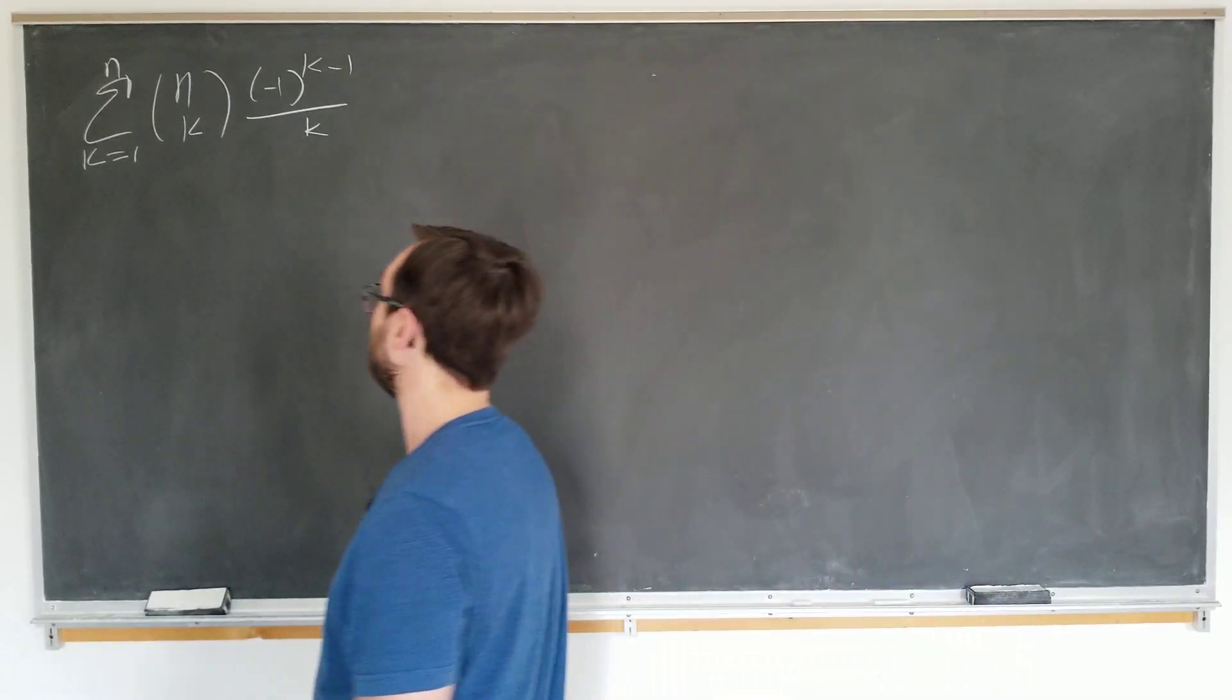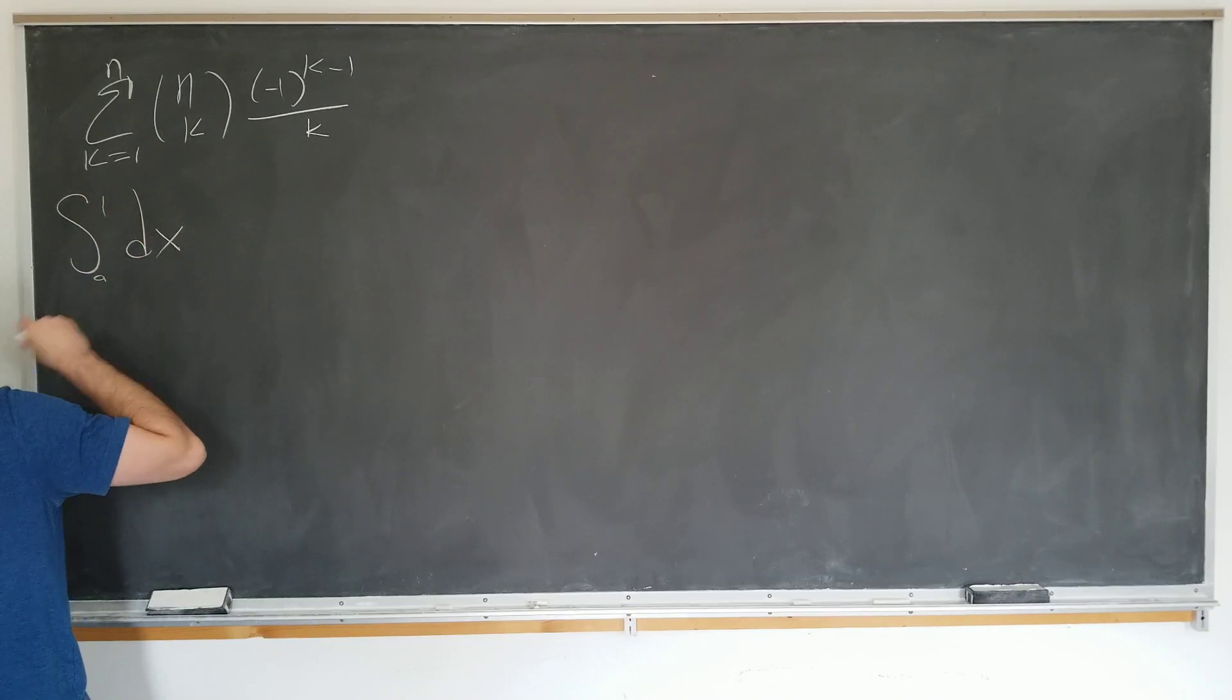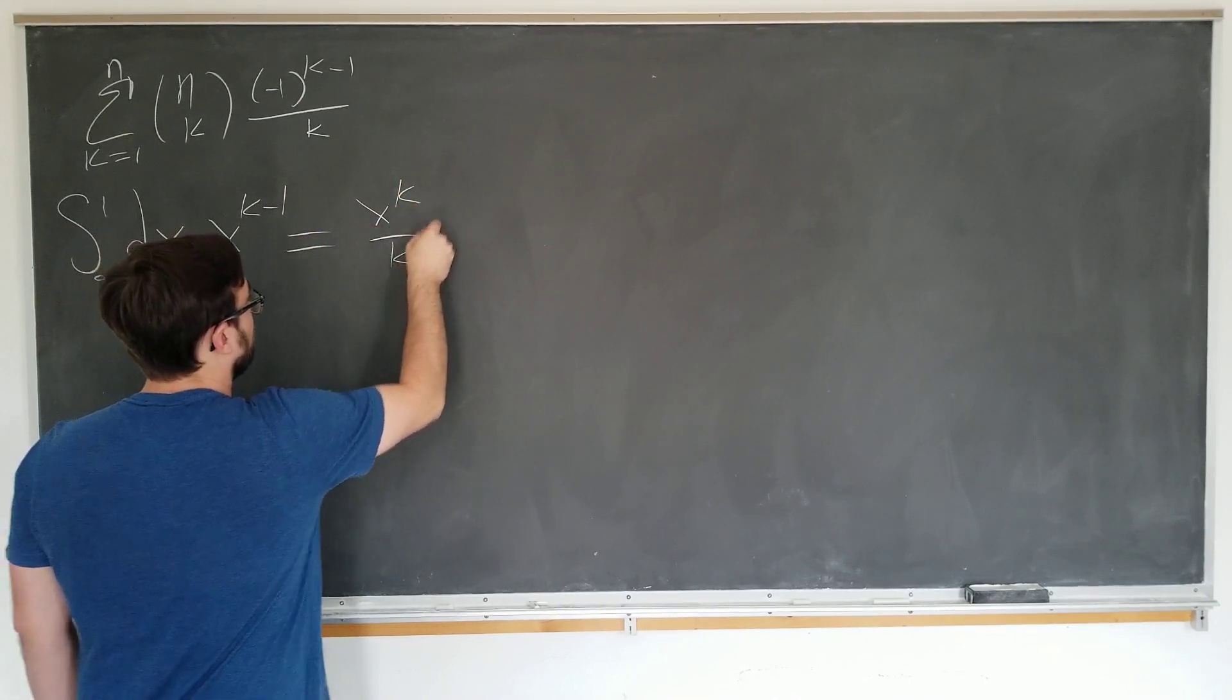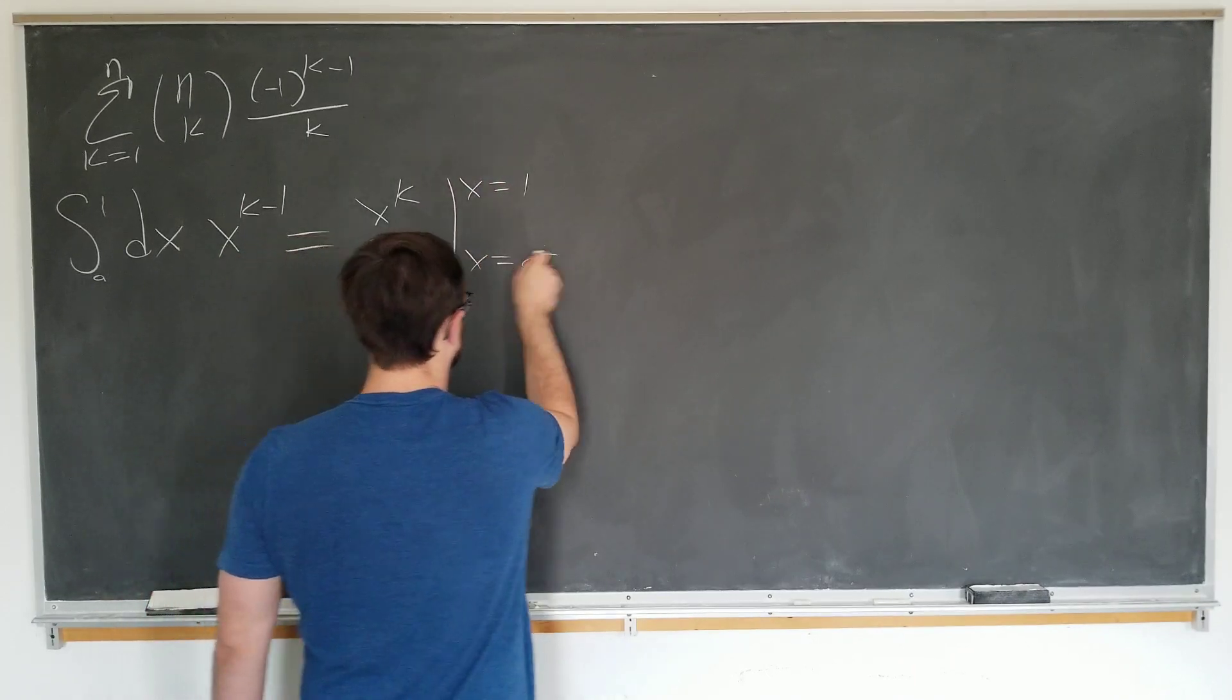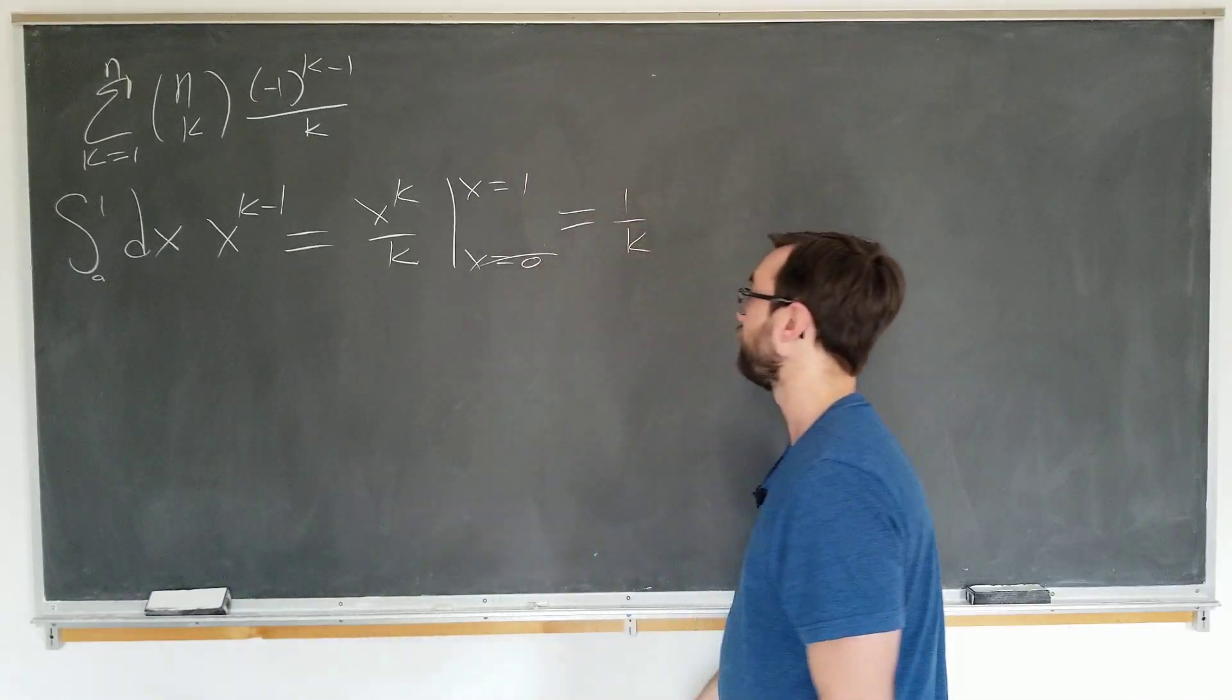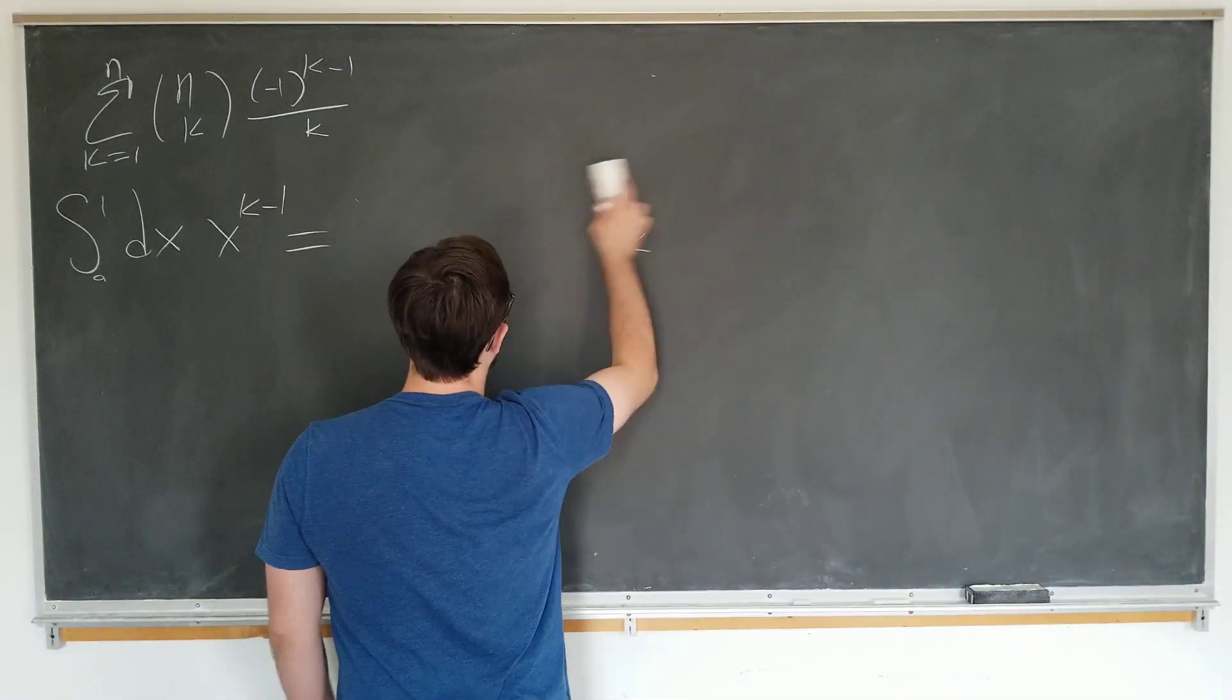So let's begin. First trick we're going to use is the fact that the integral from zero to one with respect to some variable x of x to the k minus one is equal to x to the k over k evaluated at x equals one and x equals zero. This limit becomes zero of course. So the result is simply one over k from x being evaluated at x equals one of course. This is the first trick here. This is one over k.